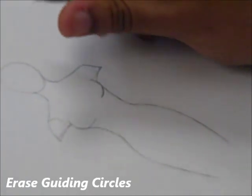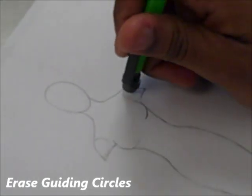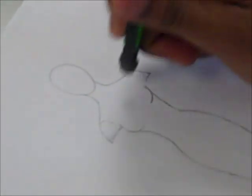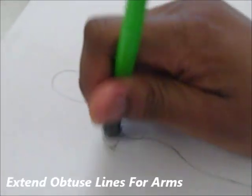Now we're going to tackle her arms. Remember those circles that you made? You can now erase them. You don't need them anymore. They were to guide you.